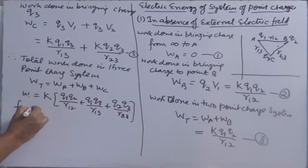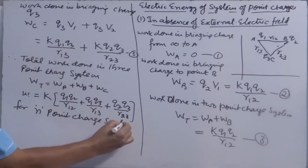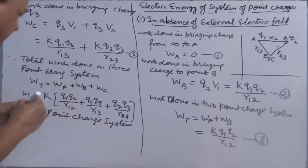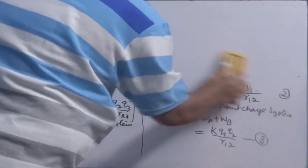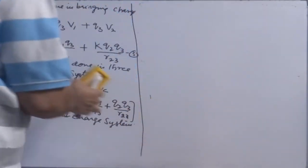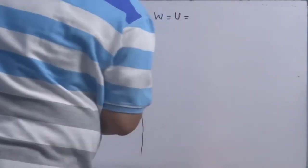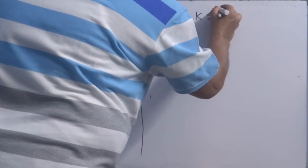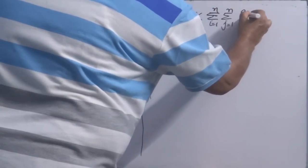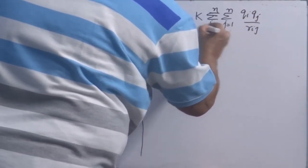For n point charge system, or system of n point charges, we will generalize this algebraically. Because we know and we have seen the trend, how the expression is going on. For n point charge system, we can easily write: W is equal to potential energy, electrical potential energy. K by 2, sigma I equals 1 to N, sigma J equals 1 to N, and QI QJ over Rij, where I is not equal to J.